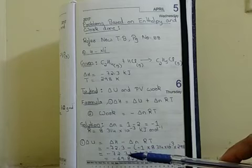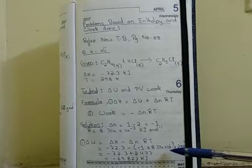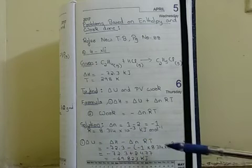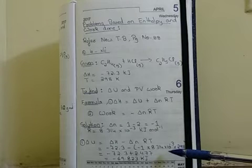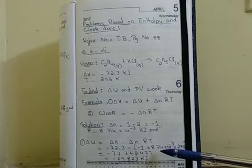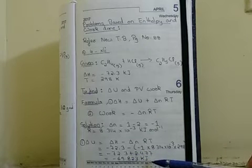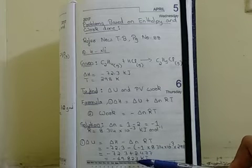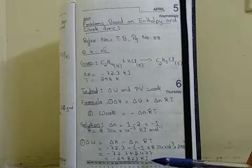ΔH is -72.3 minus bracket Δn = -1, R = 8.314 × 10⁻³, and temperature 298. We will first find out the ΔnRT value using log calculations, which gives us 2.477. Adding this to -72.3, the answer comes as -69.823 kilojoules. Whenever we are doing numericals, along with the value, the second important thing is the unit. If you do not write the unit or if the unit is wrong, half a mark is deducted, so make sure you write the correct unit for each calculated value.